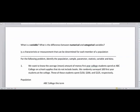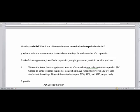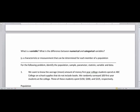What's a variable? A variable here is a characteristic or measurement that can be determined for each member of the population. Numerical and categorical variables - the numerical value is a number, so if you wanted to know somebody's age that would be pretty easy to write down numerically.